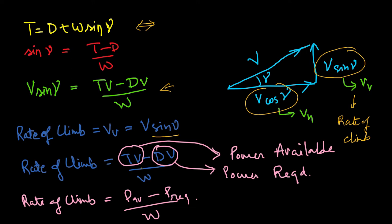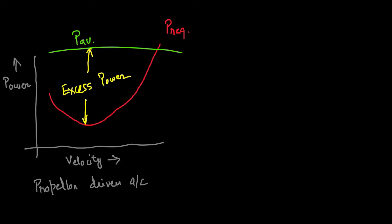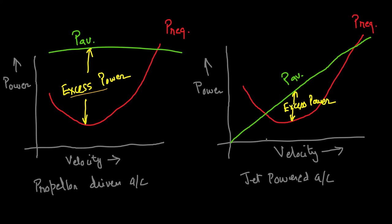Assuming the flight path angle is very small, rate of climb = (power available − power required) / W. The difference between power available and power required is known as excess power. Graphically, power available is the green line and power required is the red line for a propeller-driven aircraft. For a jet-powered aircraft, the power available line passes through the origin at an incline. In both cases, the difference between the two lines gives the excess power.